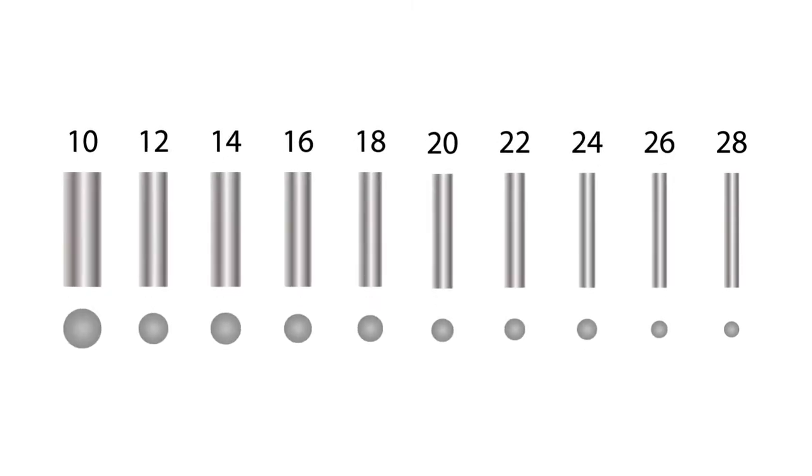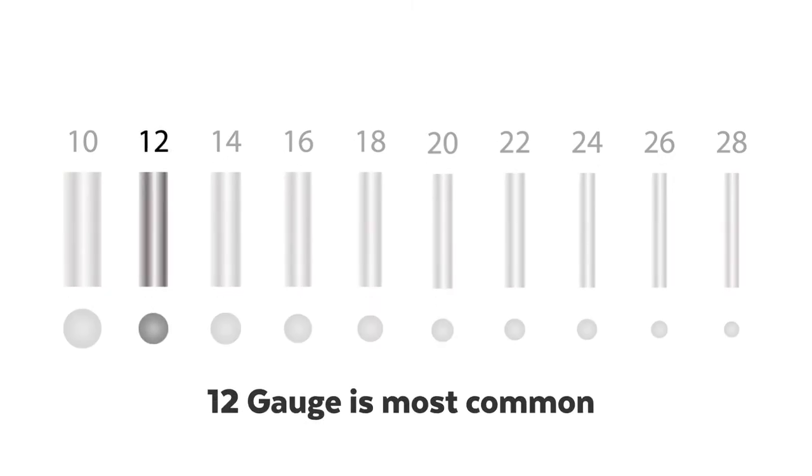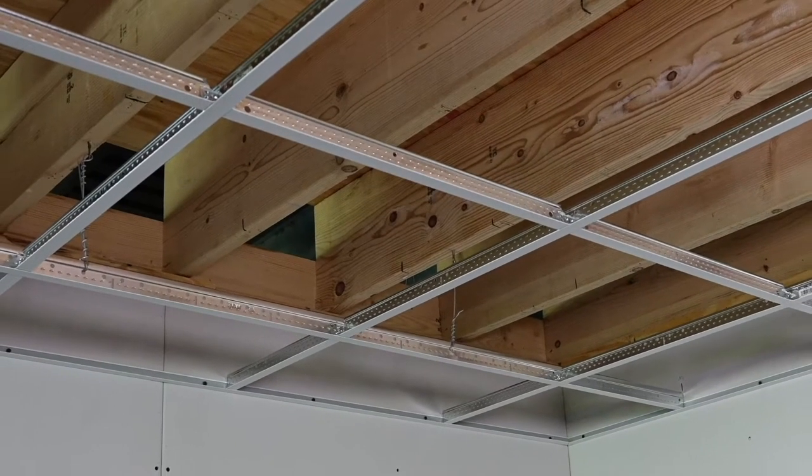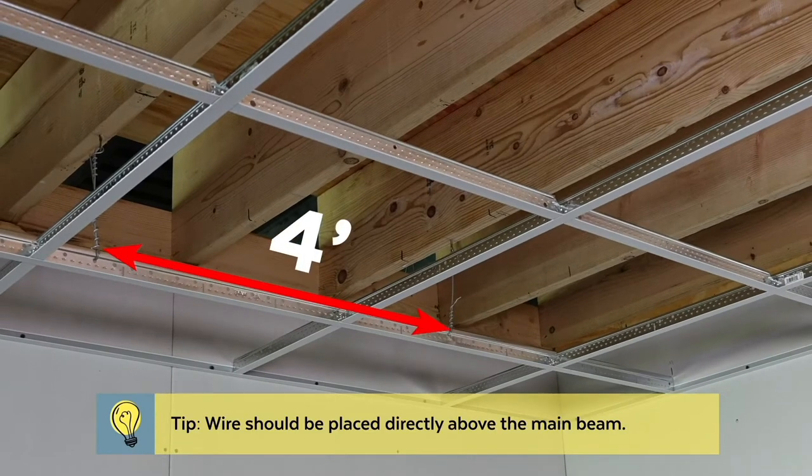These wires come in a range of lengths and diameters. The most commonly used size is 12-gauge wire. Hanger wires suspend main beams and are typically spaced 4 feet apart in both directions.